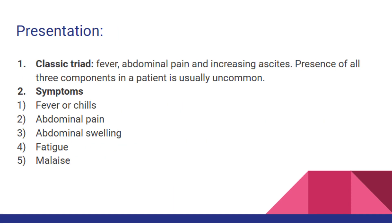Presentation. Number 1: Classic triad — fever, abdominal pain, and increasing ascites. The presence of all three components in a patient is usually uncommon.